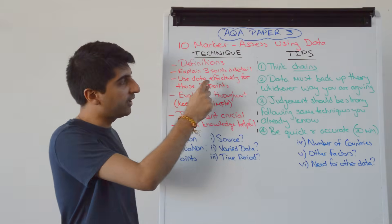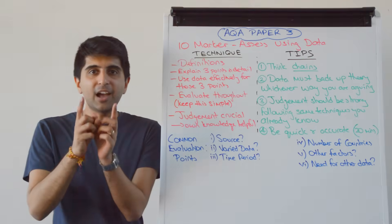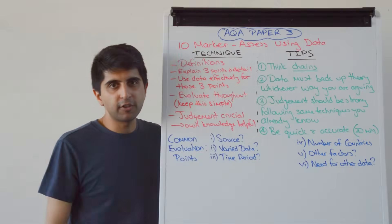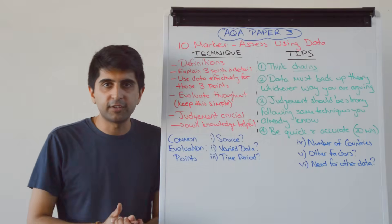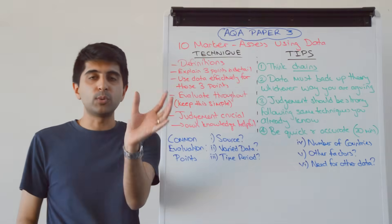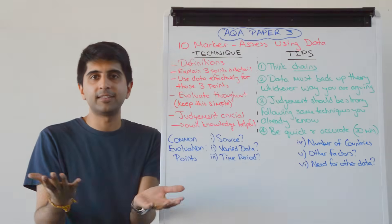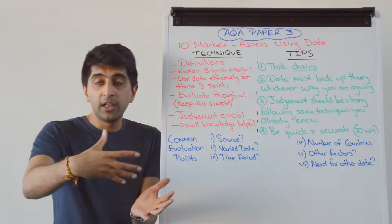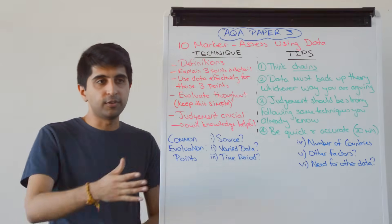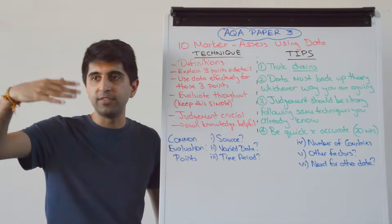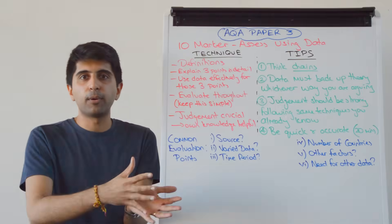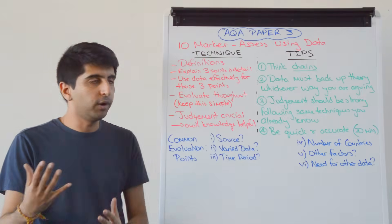Crucially, you've got to use data effectively to back up those three points. For example, if the question is about assessing the impact of monetary policy, and you've got data about growth, you'd explain the link between expansionary monetary policy and economic growth — that's your point and your theory. You then use data to back it up, looking at the impact on growth in specific quarters. That's a sign of monetary policy working.